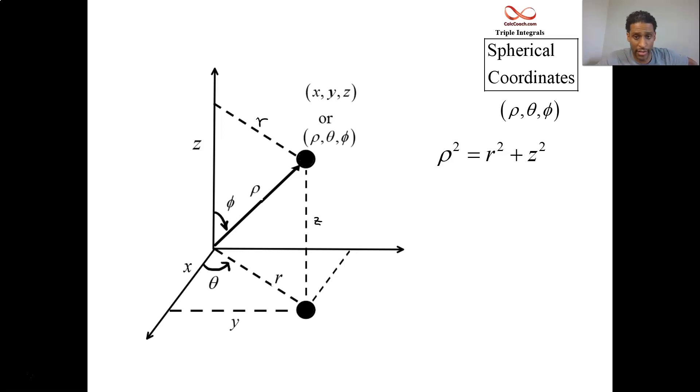But r squared has a connection to x and y. You know, r squared is x squared plus y squared. And so rho squared is x squared plus y squared plus z squared. When rho is a constant, that's the radial distance outward from the origin, is a constant that's a sphere. And that has the equation, x squared plus y squared plus z squared equals to a constant. That's a sphere centered at the origin.